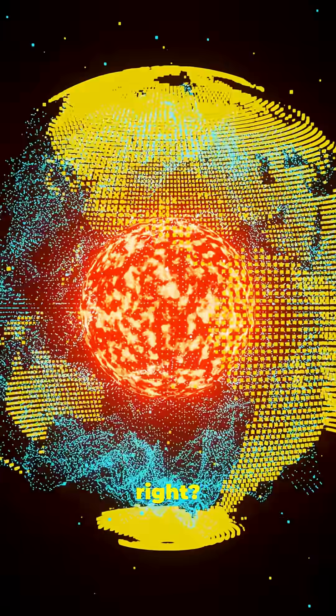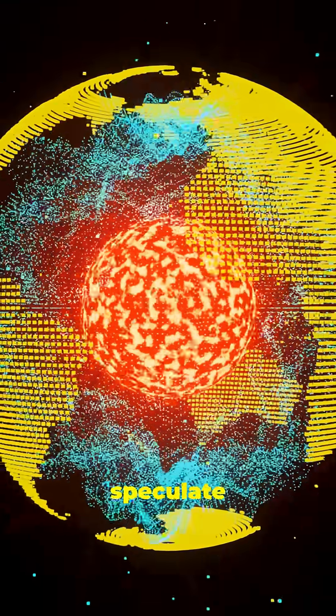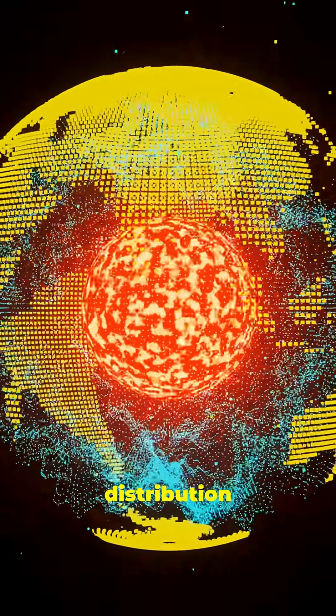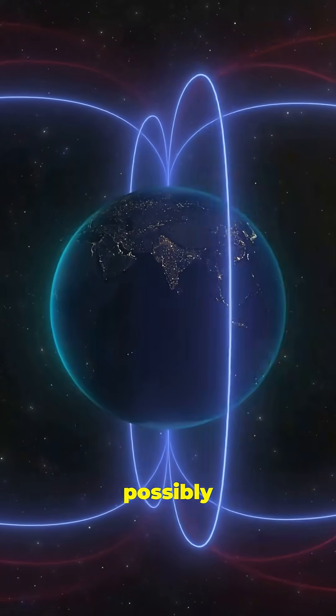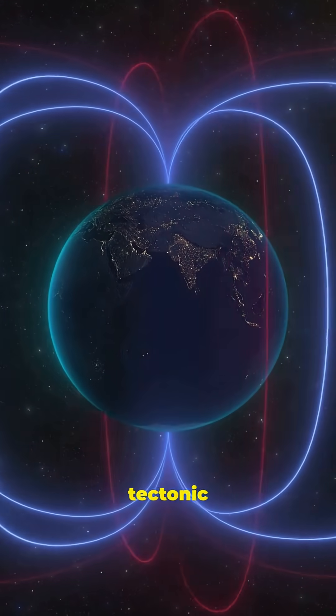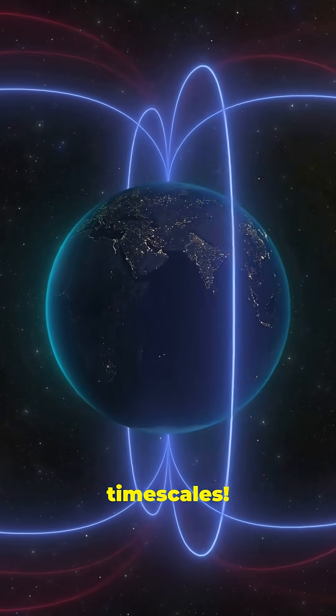Wild, right? And some geophysicists speculate that this constant off-center mass distribution might subtly influence Earth's liquid outer core motion, possibly affecting our magnetic field or even tectonic rhythms over vast timescales.